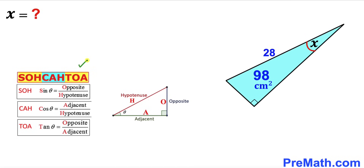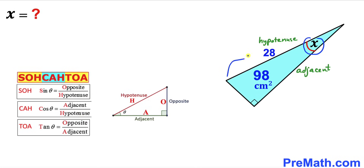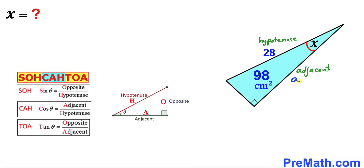Let's recall SOH-CAH-TOA. We are interested in cosine of theta equal to adjacent divided by hypotenuse. In our case our angle is x, our hypotenuse is 28, and this is our adjacent. Let me go ahead and label this adjacent as lowercase a, and now we are going to find the value of a. So cosine of x is going to be equal to a divided by 28.